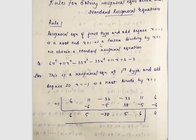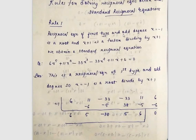Rule 1: A reciprocal equation of first kind with odd degree always has x = -1 as a root. That means (x + 1) is a factor. We divide the equation by (x + 1) to reduce it to an even degree, giving us a standard reciprocal equation to solve.